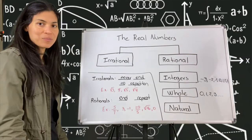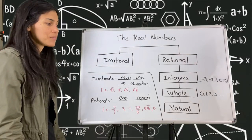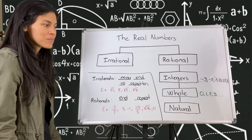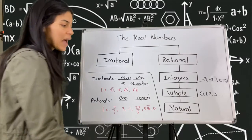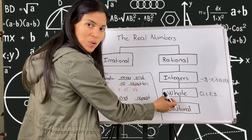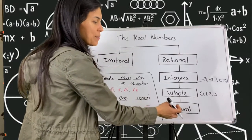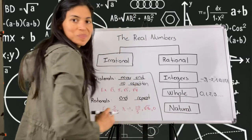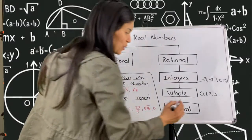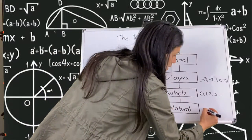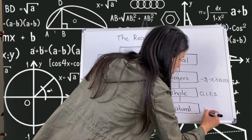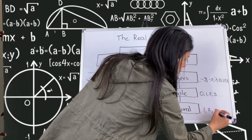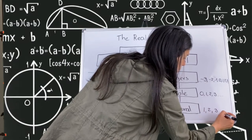The last classification here is natural numbers. Natural numbers are similar to whole numbers, but they do not include 0. So natural numbers start with the positives: 1, 2, 3, and so on.